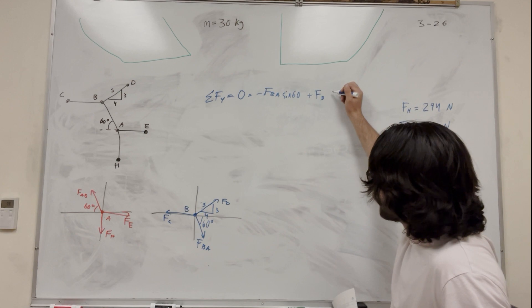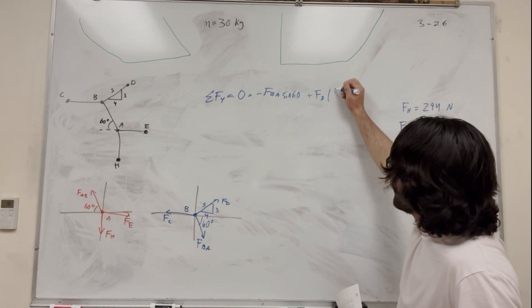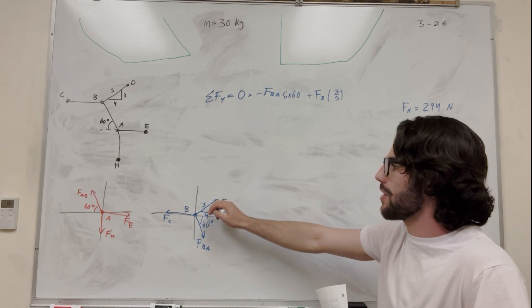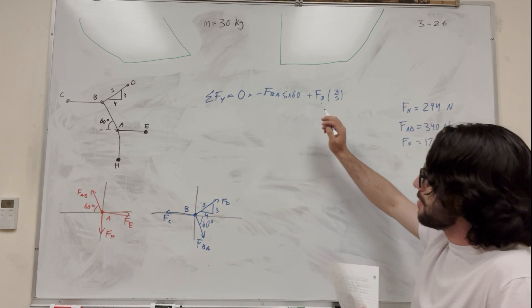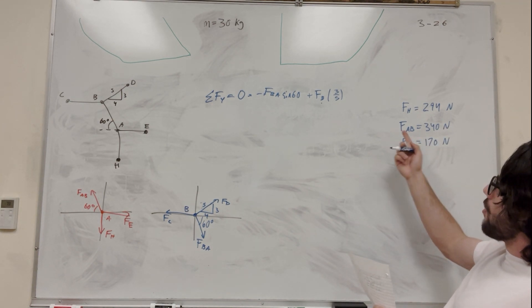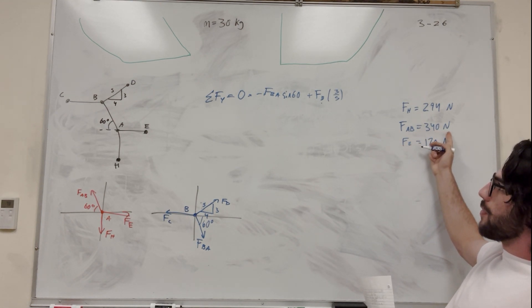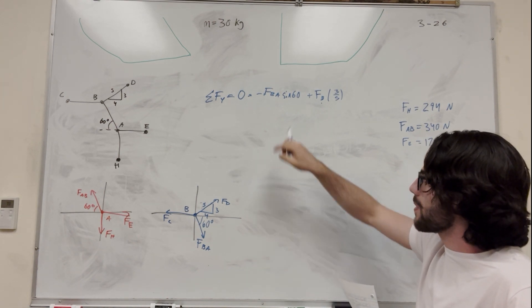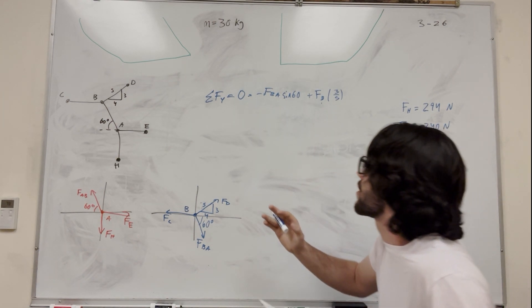So then if we're going to take this and we're looking at just the Y direction, we need to attach what to this, right? It needs to be sine, right? Because sine is going to give us the opposite, which is going to be the vertical component here. So then we need to add force BD, right? Or force D, just force D. And then we're going to take, what's the Y component of this? Well, 3 over 5, right? Because the Y to hypotenuse ratio is 3 over 5. So if you multiply that by force D, you're just going to get the Y component.